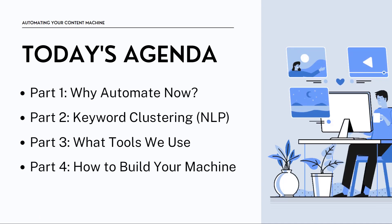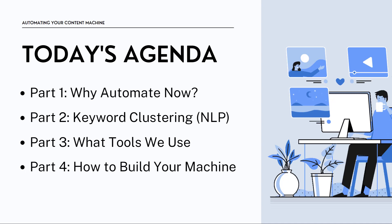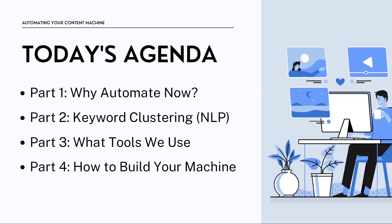On today's agenda: part one is why automate now — there's something happening at the end of 2021 and beginning of 2022 that you need to pay attention to if you're a content marketer. Part two is about keyword clustering, the new way to effectively rank your entire website, not just one page. Part three covers what tools we use, and part four I'm going to show you how to build your own machine.